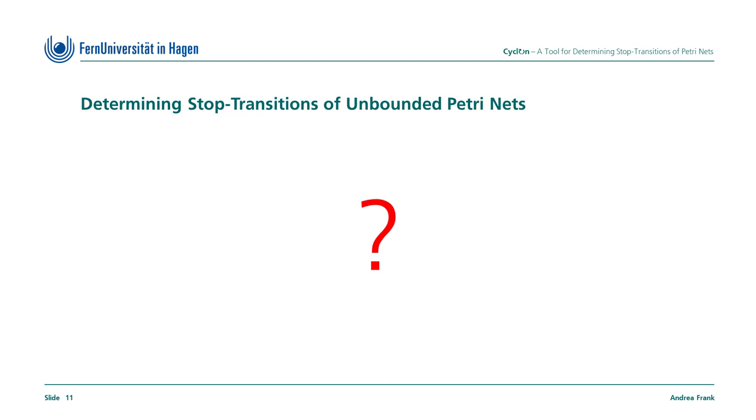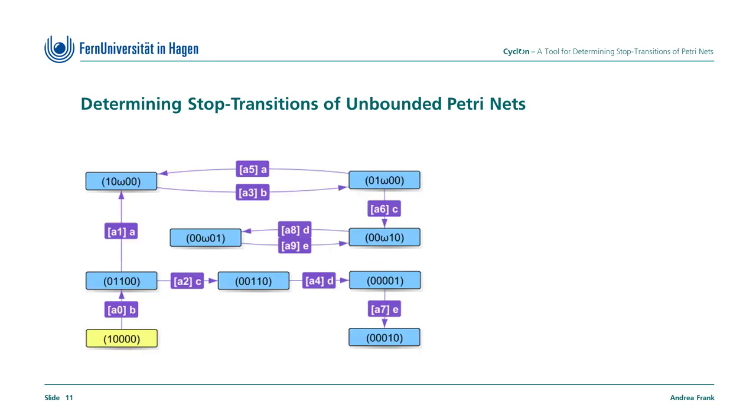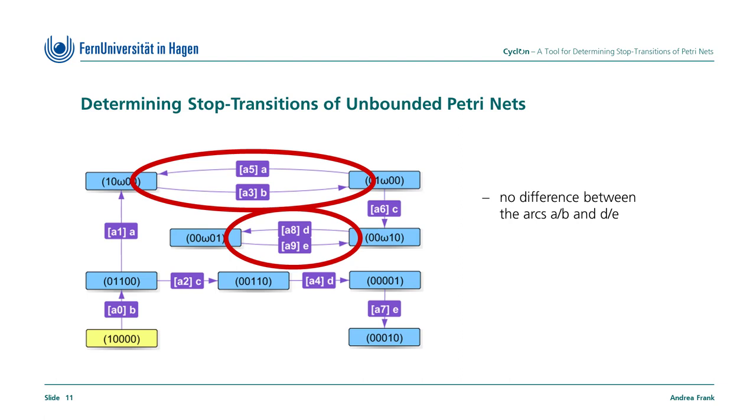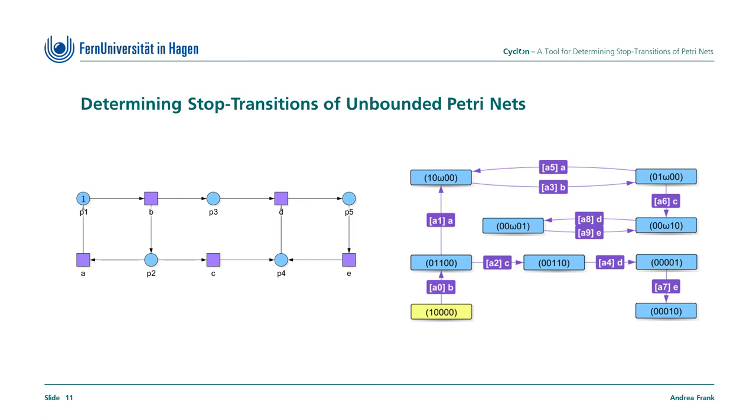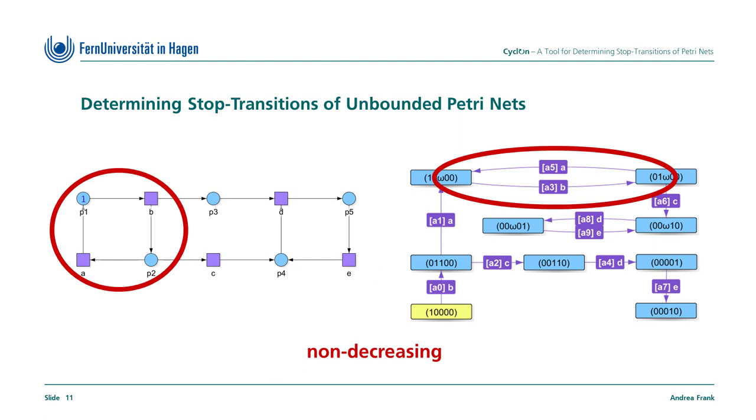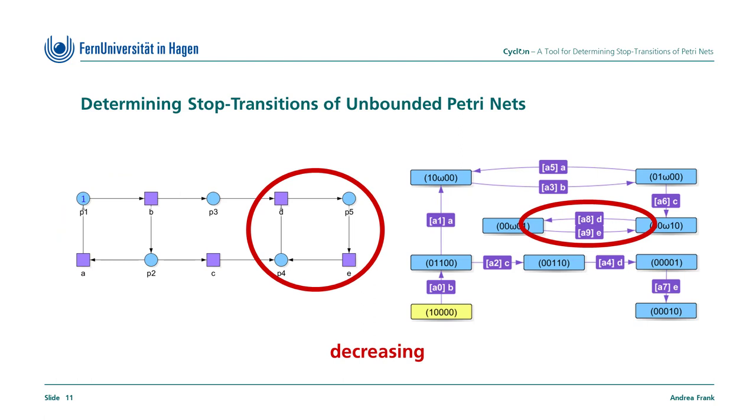But how can we identify stop transitions algorithmically? For this, let's look at a coverability graph corresponding to the Petri Net. There are two cycles in the coverability graph, this one and this one, but there are no differences between these two cycles. Thus, examining the coverability graph for cycles does not yield a characterization of stop transitions in unbounded nets, as it is the case for cycles in reachability graphs of bounded nets. From the previous observations, we know that this cycle is decreasing and this one is non-decreasing. Non-decreasing cycles can be arbitrarily repeated, whereas decreasing cycles will eventually come to an end.